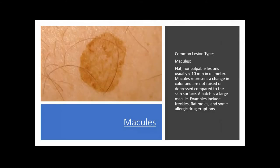Now for our new information — dermatological terms and manifestations, and when to appropriately use these terms when documenting your assessment. The first term is a macule. Macules are flat, non-palpable lesions, usually less than 10 millimeters or one centimeter in diameter. Macules represent a change in color and are not raised or depressed compared to the skin's surface. A patch is a large macule. Examples include freckles, flat moles, and some allergic drug eruptions.